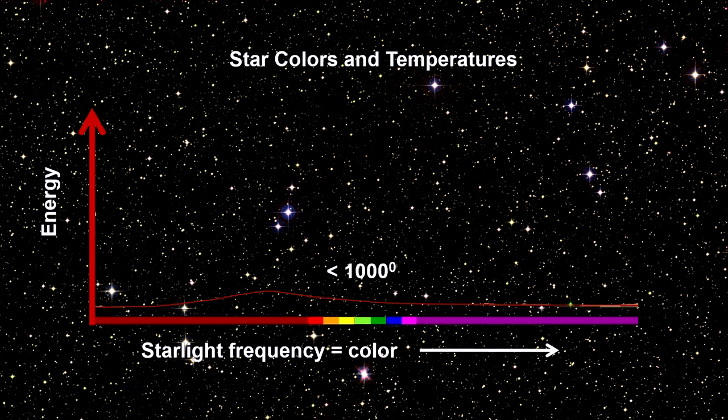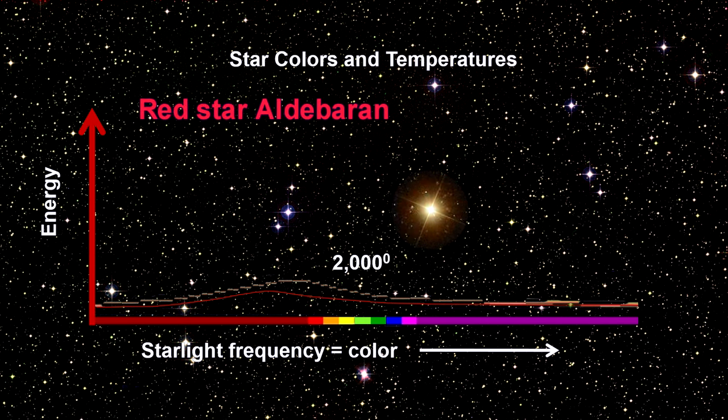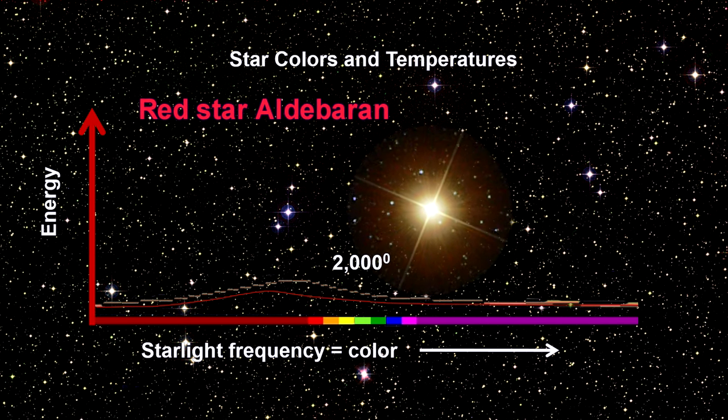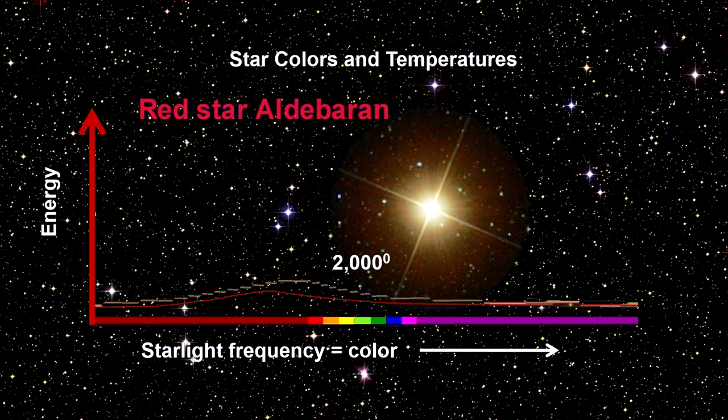As the heating starts, the radiation is all in the infrared range, so we can't see it. As the temperature approaches 2,000 degrees Celsius, we begin to see red. We've seen the red star Aldebaran. It's a good example of this.